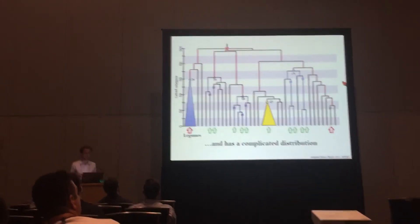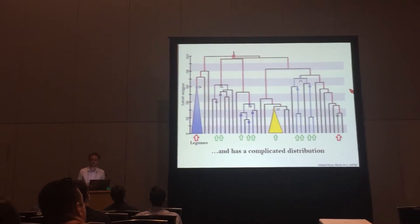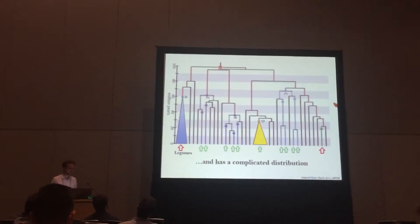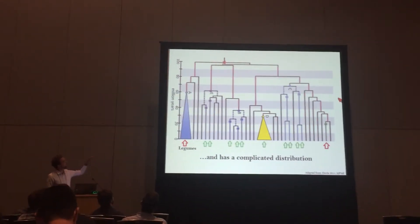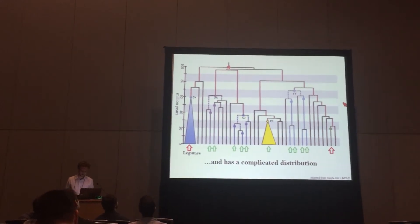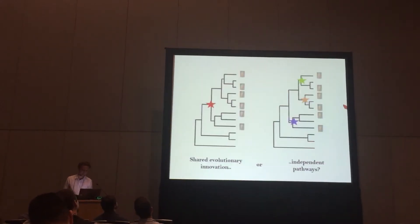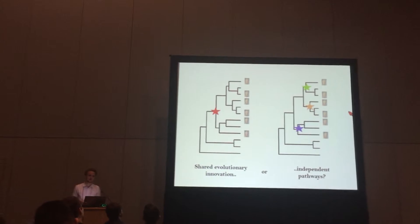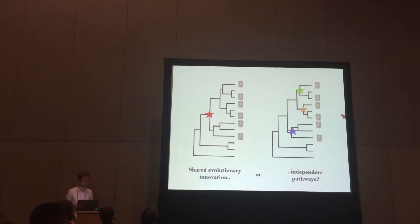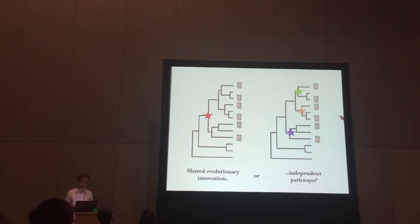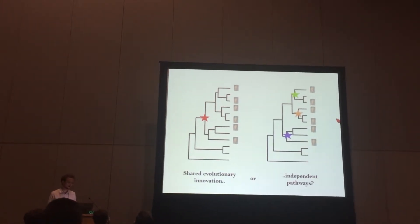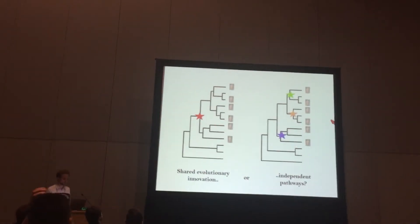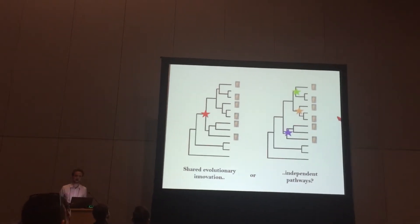That has led to various informal hypotheses about the evolutionary history of this trait. But one of the main questions has always been: do all these contemporary cases of symbiotic nitrogen fixation share one underlying evolutionary innovation, or did they evolve through independent origins?